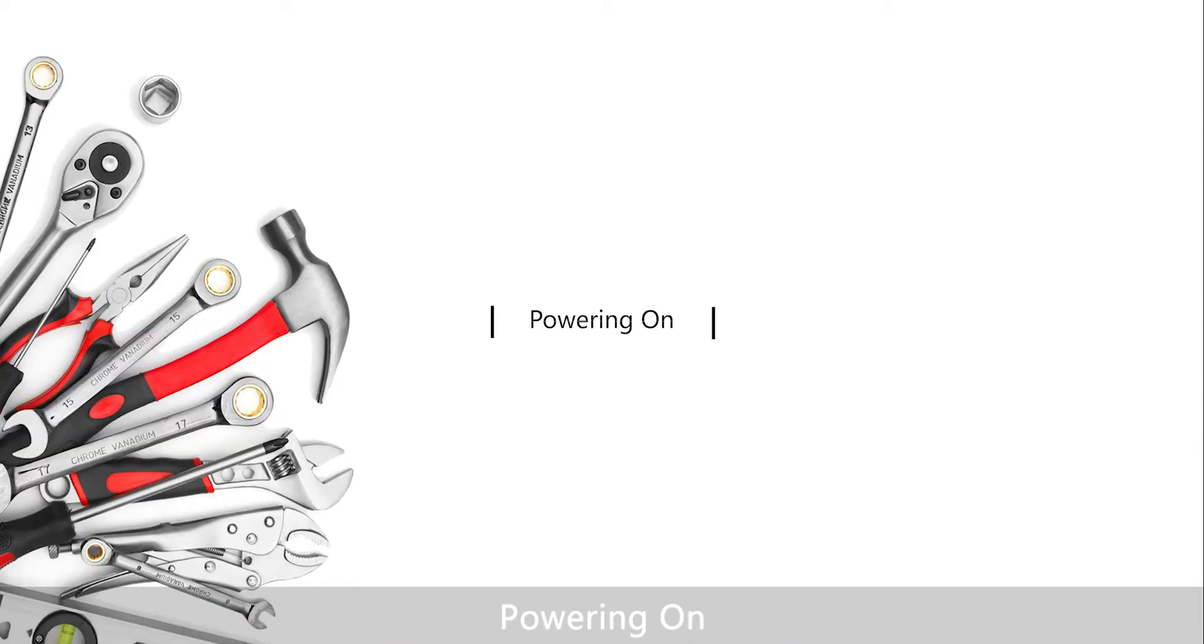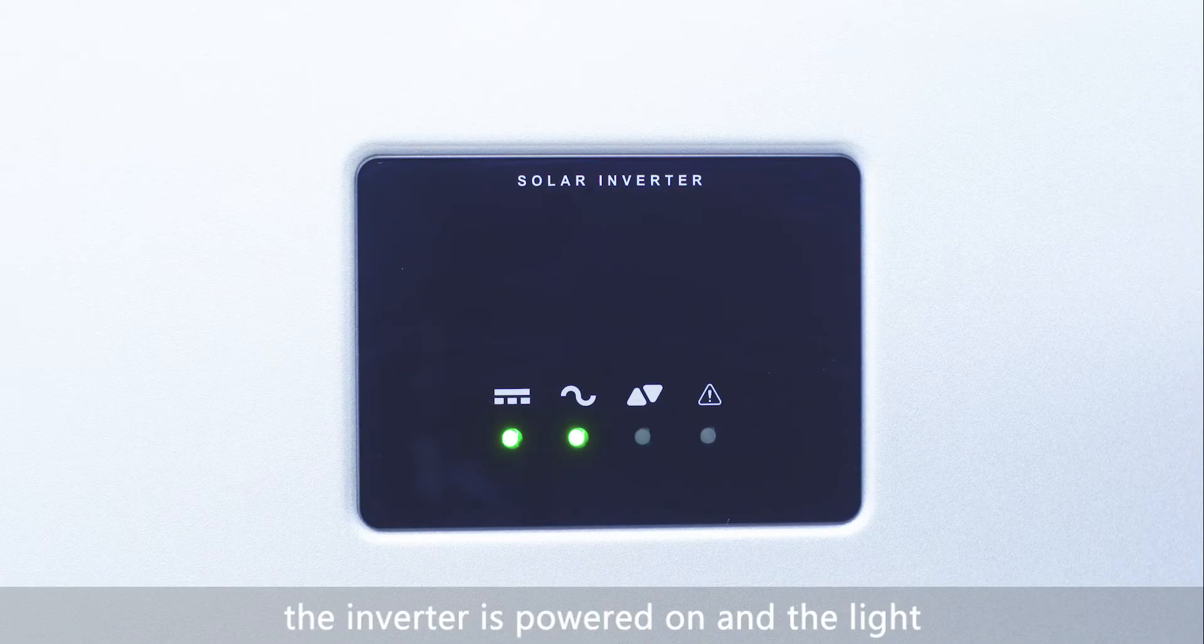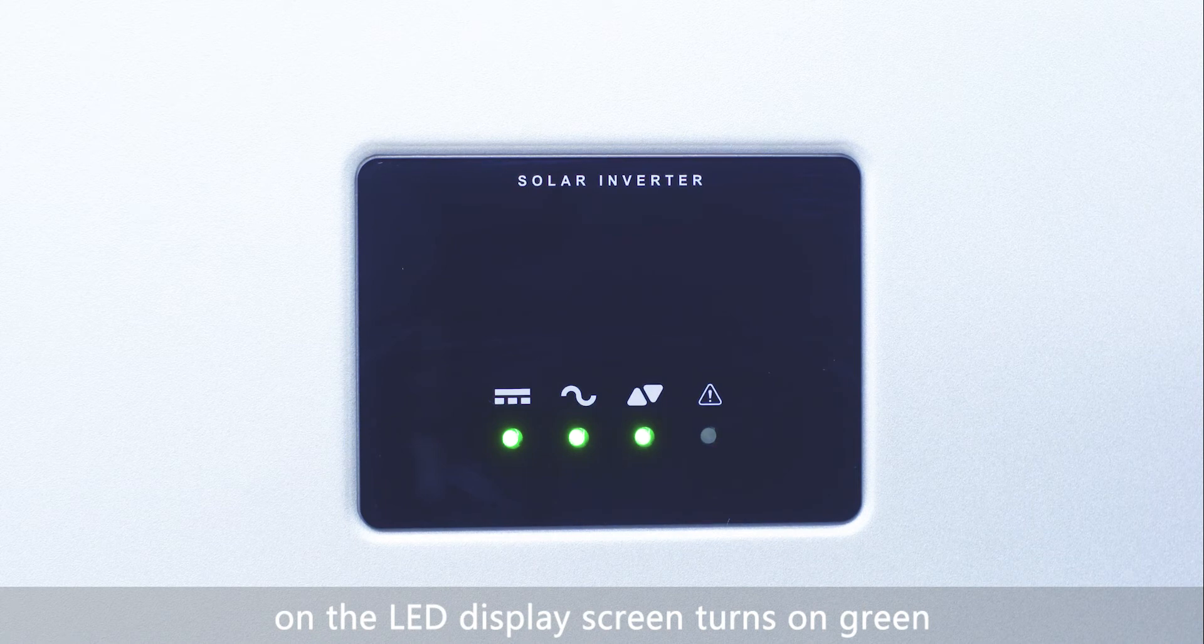Powering on. Turn on DC switch. The inverter is powered on and the light on the LED display screen turns on green.